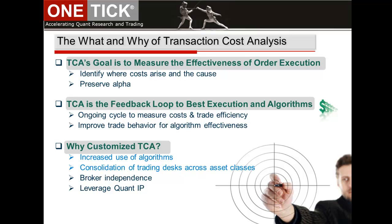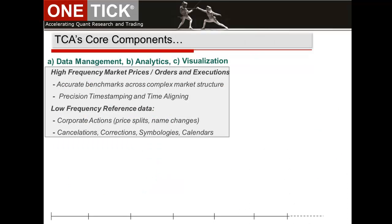Broker independence is another driver: firms are relying less on brokers to manage their order execution, favoring use of their own algos and leveraging in-house quantitative expertise. The tools to quantify executions and measure how well they perform against benchmarks are becoming common in all asset classes, using the same low-latency technologies as the high-speed trading crowd. The three core technologies are data management, analytics, and visualization.